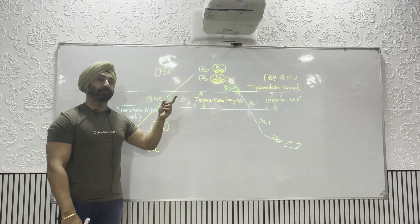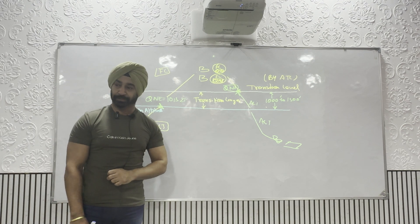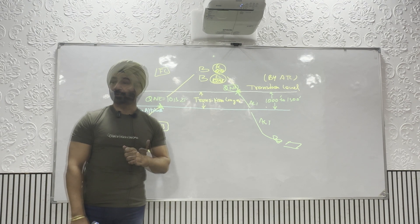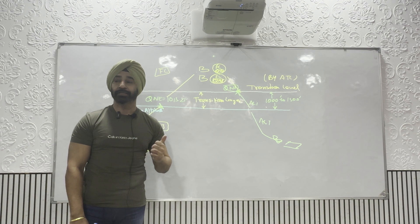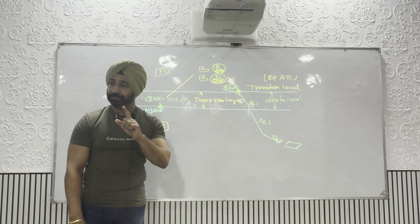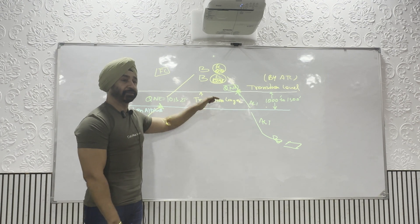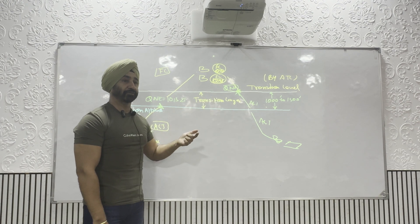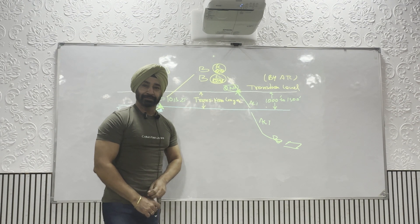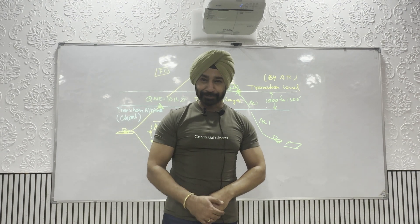We will see this again when we start regulations next week. The lowest transition altitude in India is 4000 feet, and the lowest flight level available is FL50, because the transition layer can be just 1000 feet above. See you after the break. This is your captain speaking.